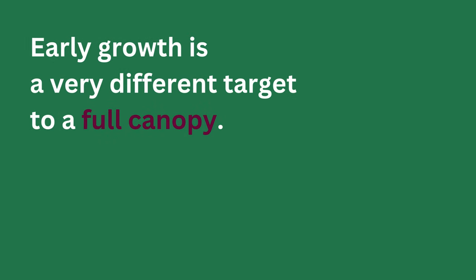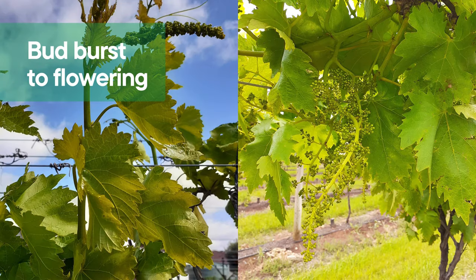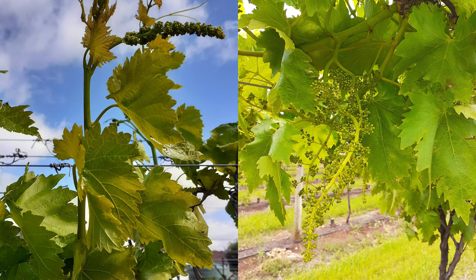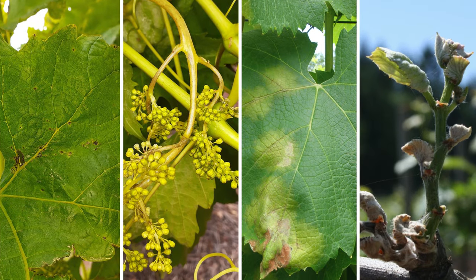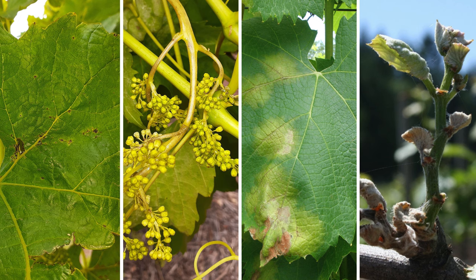Early growth is actually a very different target to a vine that's got full canopy. From Bud Burst to flowering the canopy changes rapidly. We've got shoots that are lengthening, our leaves are expanding, we've got a whole lot of new and unprotected tissue and it might be vulnerable to phomopsis and downy mildew, powdery mildew.